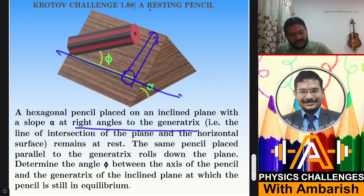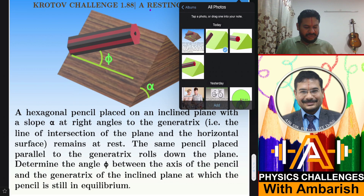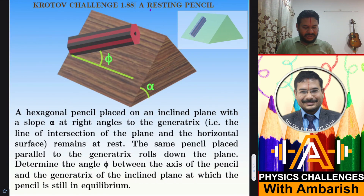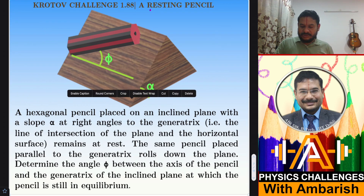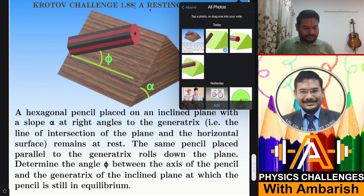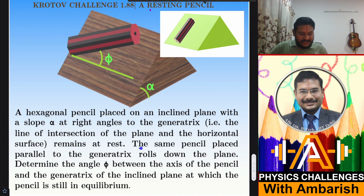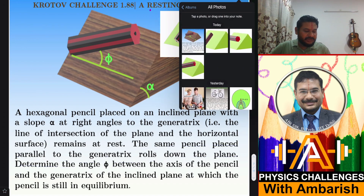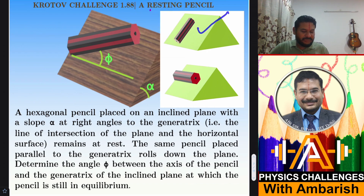When we place the pencil in this orientation — at right angles to the generatrix — it is at rest, as shown in the figure. The same pencil placed parallel to the generatrix rolls down the plane. So in the first situation the pencil is stable, but in the second situation it rolls down.